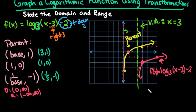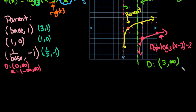The domain is all values of x greater than 3. In interval notation, this is (3, ∞), not including 3. In set notation, this is {x | x > 3}.